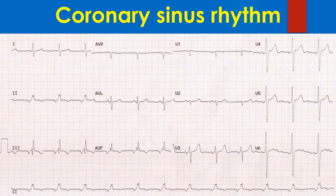ECG showing inverted P waves in inferior leads. It may be noted that the inverted P in lead 3 is sharp, as noted by Scherf D and associates. The QRS complexes in inferior leads can be considered either as fragmented QRS or resembling the crochet sign in atrial septal defect. Coronary sinus rhythm can occur in sinus venosus type of intra-atrial communications due to a defective sinus node.